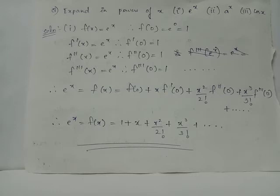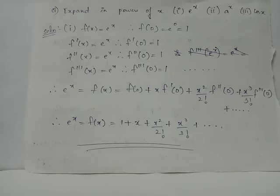Therefore, e^x can be expanded using the Maclaurin series as f(0) + x·f'(0) + x²/2!·f''(0) + ... Thus we obtain: e^x = 1 + x + x²/2! + x³/3! + ...